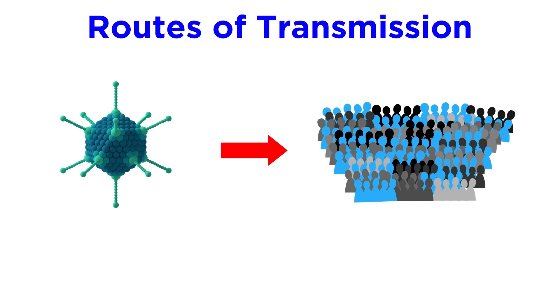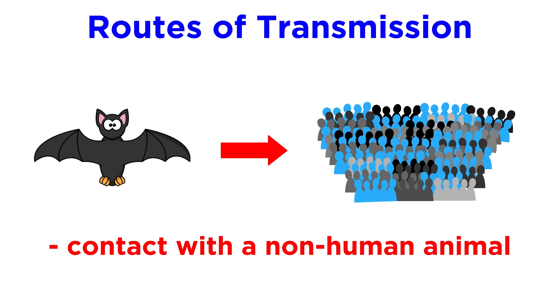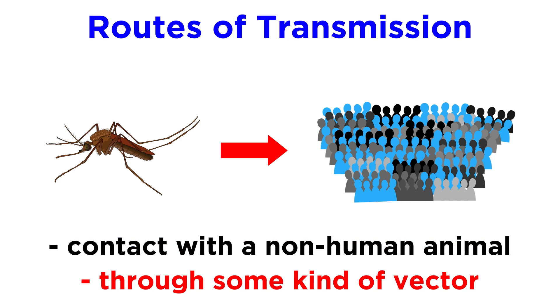The most common routes of transmission into a human population are either direct or indirect contact with a non-human animal, or through a vector, like a mosquito, that acquired the virus from a non-human animal.